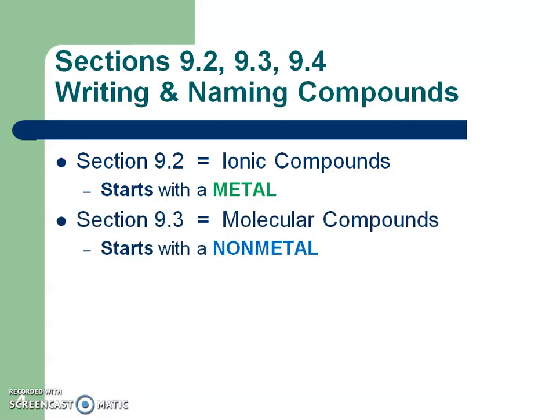In 9.3, we're going to be talking about molecular compounds — sometimes they're called covalent compounds. Those are going to start with a non-metal. Non-metals are located to the right of that stair-step line on the periodic table. We need to take notice as to what type of element we're starting our compound with, and that's why that periodic table chapter was so important.